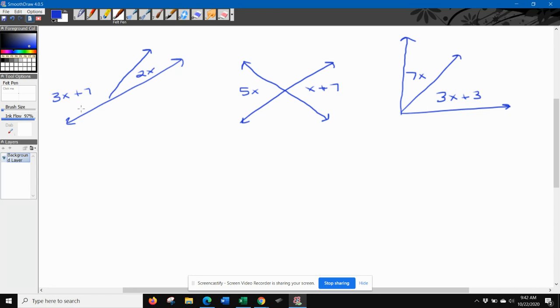The first type is an equation where it makes a straight line. We call these supplementary angles. They equal 180 degrees.